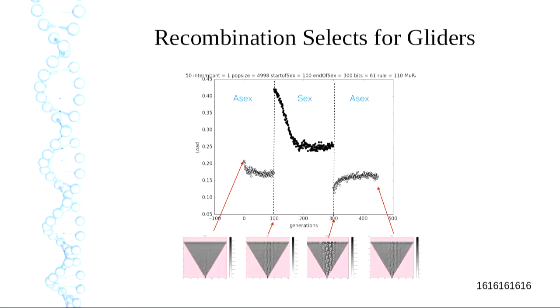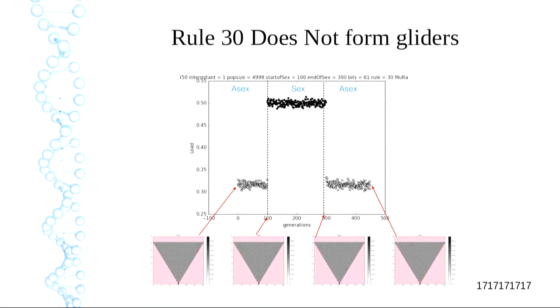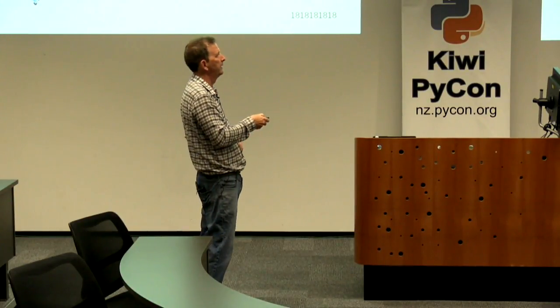When we turn recombination off, it expands back out. How is it discriminating? Because it can make gliders, it doesn't need much of the genome — just that little part that makes the glider that slides down and hits the indicator bit. The rest of the genome is pretty much neutral. With small gliders we can have redundancy — send two gliders down as long as they can sort out any conflict. We can also have a glider that just blocks interfering bits. These gliders allow us to make things really robust.